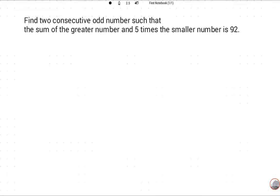First of all, please subscribe to this channel. Now let's read this question: find two consecutive odd numbers such that the sum of the greater number and five times the smaller number is 92.